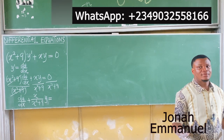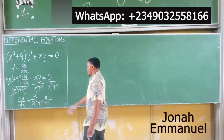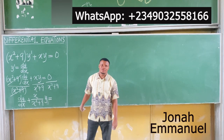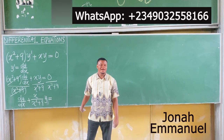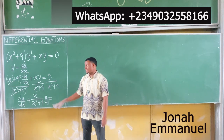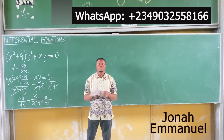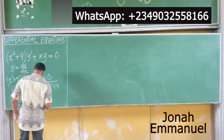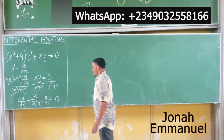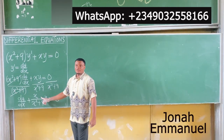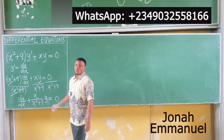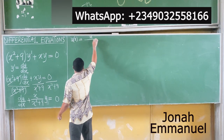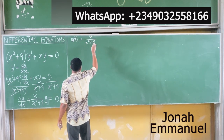0 divided by x squared plus 9 gives you 0. It's possible to have 0 as the numerator of a fraction — that's okay. But it's not proper to have 0 as the denominator of a fraction; that's undefined or infinity. So from here, we can see our value for u of x — the coefficient of y. So u of x is equal to x all over x squared plus 9.